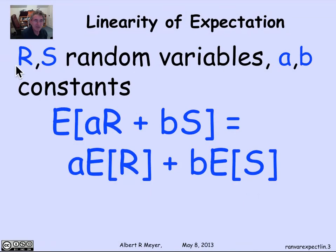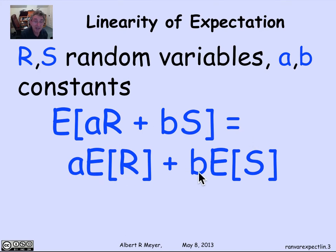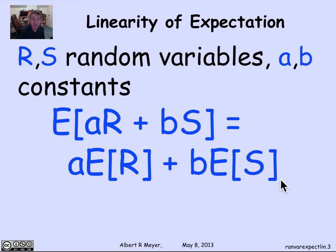What that means is that if you have two random variables r and s, and two constants a and b, the expectation function is linear. That is, you take a linear combination of r and s — that's ar plus bs — and that's equal to the corresponding linear combination of the expectations. Expectation of ar plus bs is equal to a times the expectation of r plus b times the expectation of s. Expectation is linear.